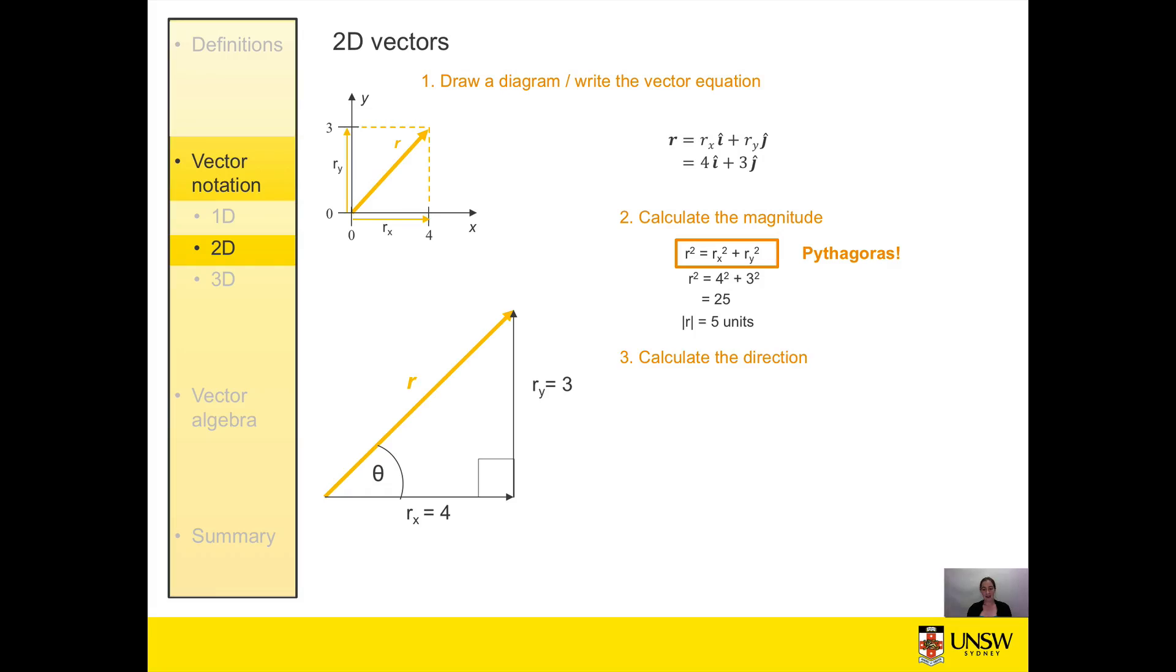When we calculate the direction, we can also use the right angle triangle to our advantage. Our direction is given by the angle theta. We can use any one of our trig identities: sine, cosine, or tan. I'm using sine because the values for ry and rx were given to me in the question. That gives us an angle of 36.9 degrees.